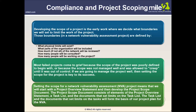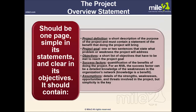Managing the project well means setting the scope is key to success. Setting scope for the network vulnerability assessment means starting with a project overview statement, then developing the project scope document. The scope document consists of elements of the project overview statement, a task list, and documents that set limits on tasks forming the basis of the project plan. The project overview statement should be generally one page, simple in its statements, clear in its objectives, and contain the project definition.